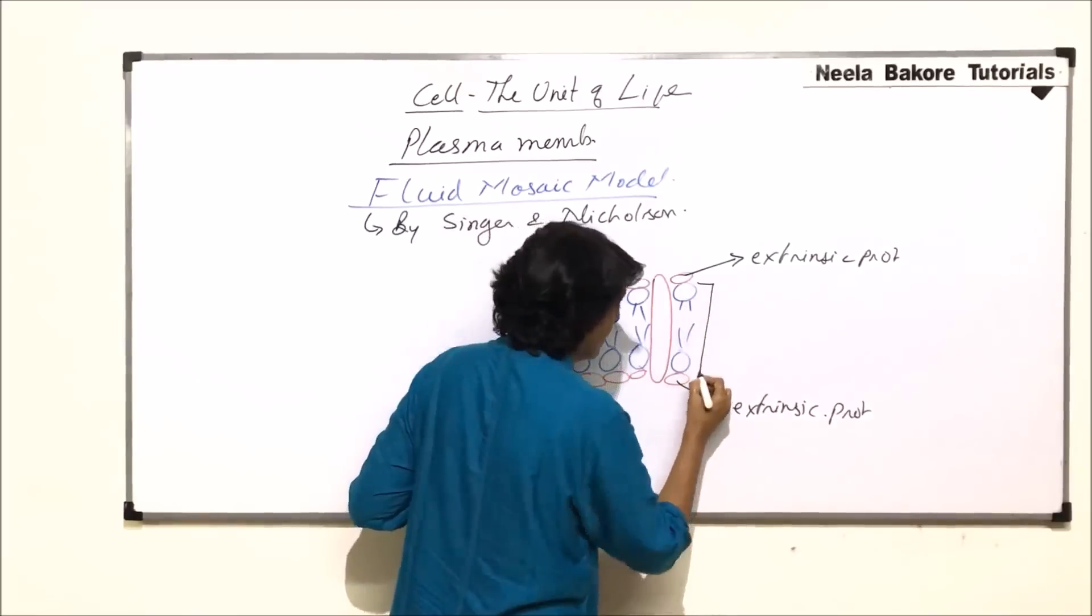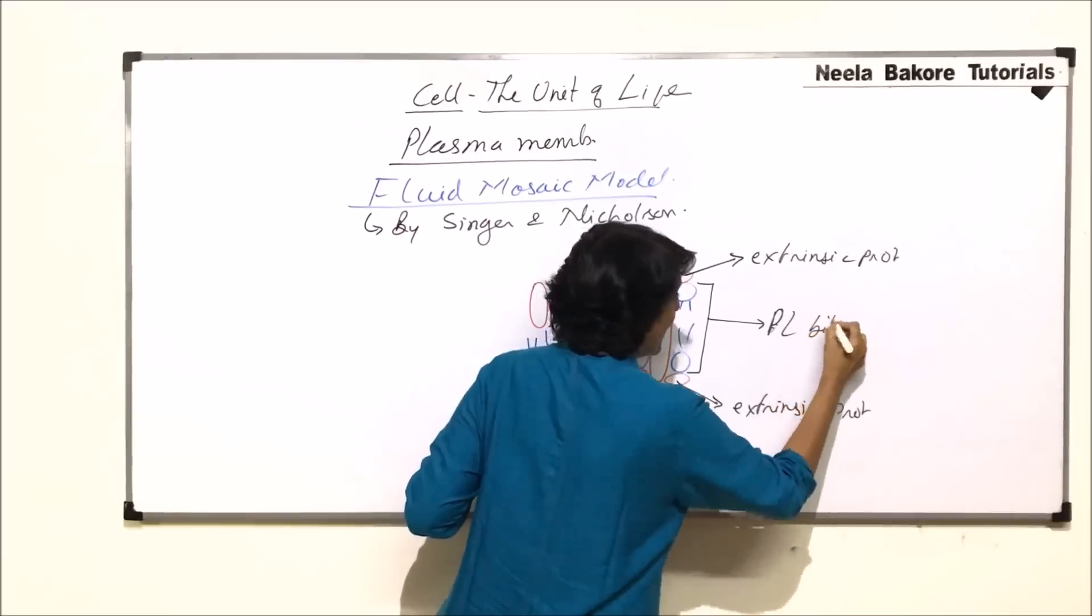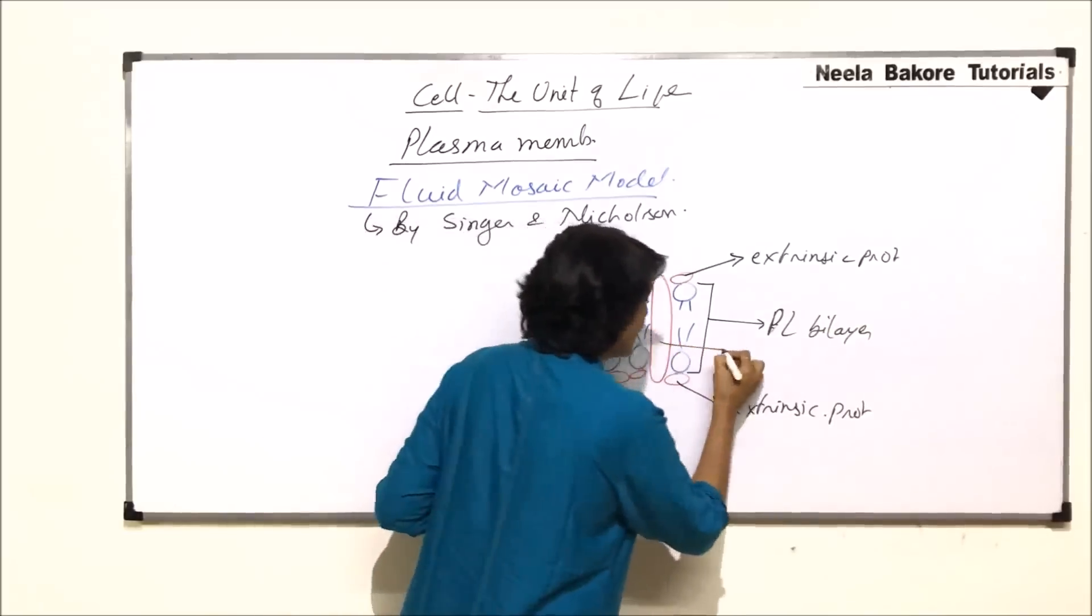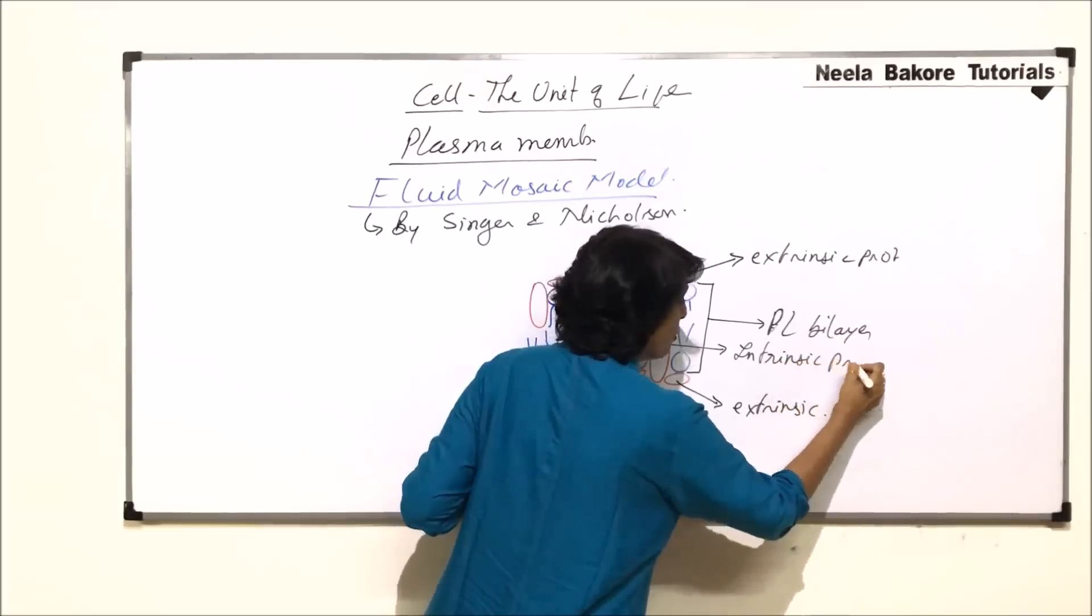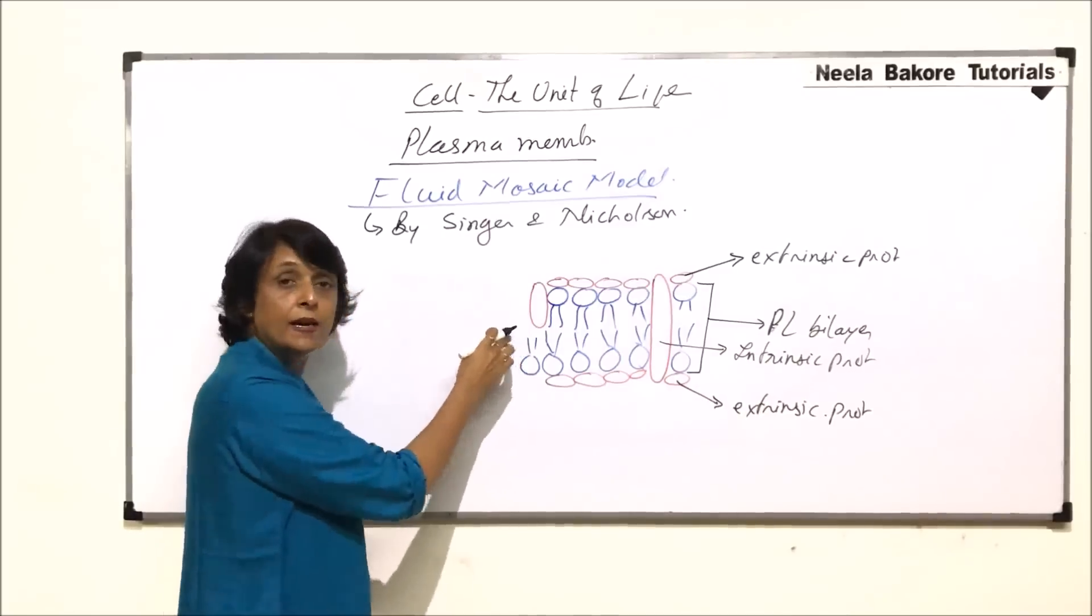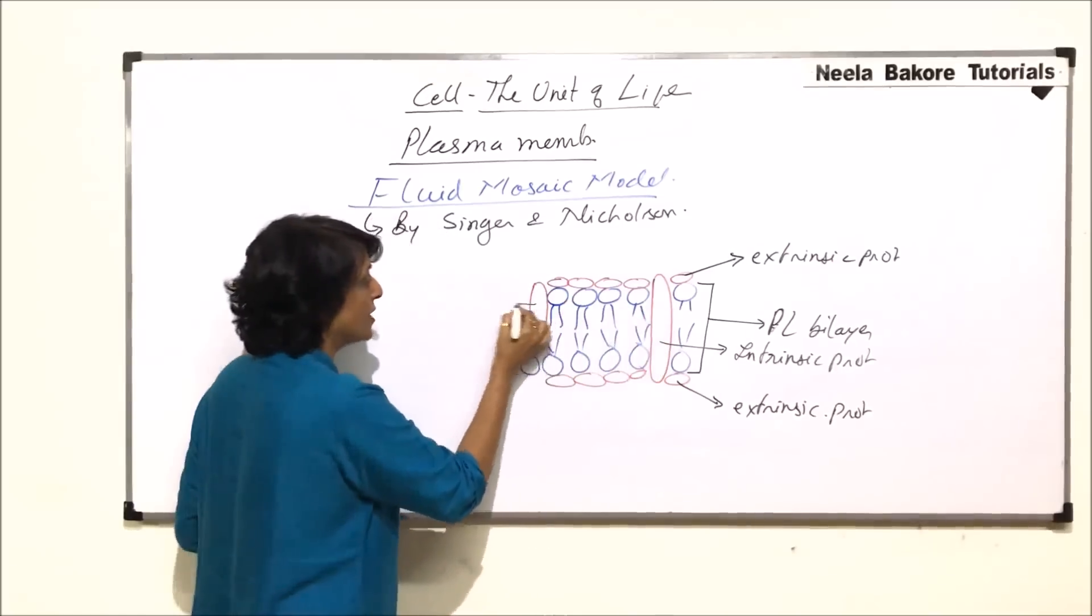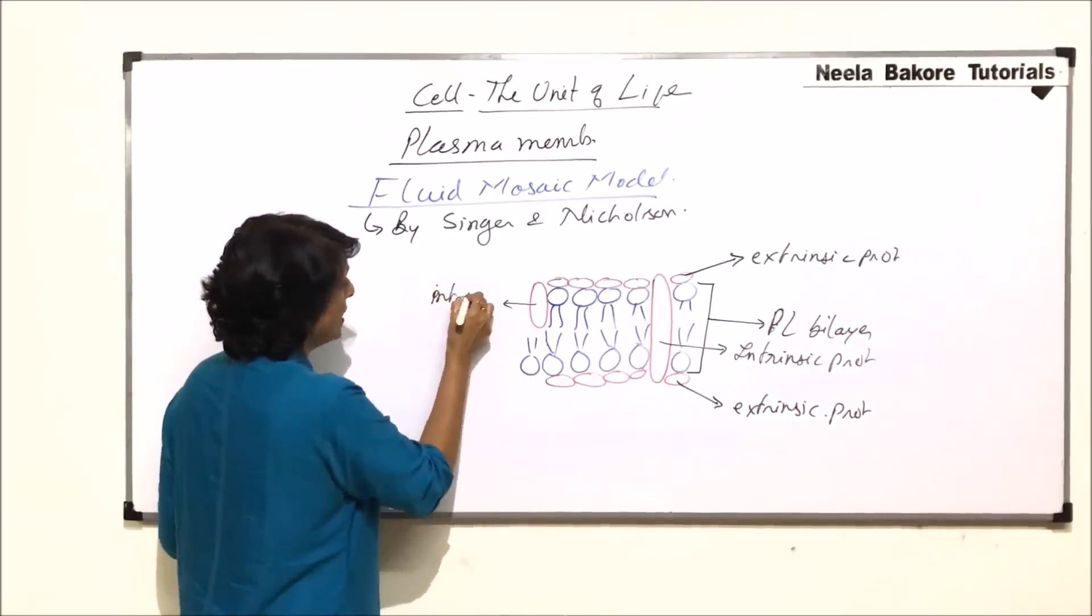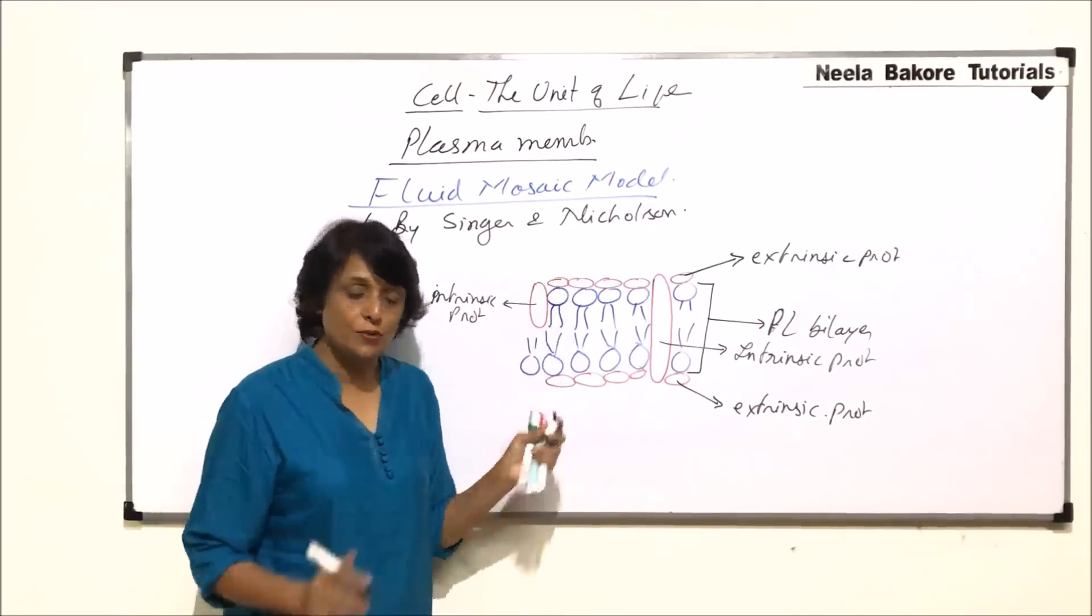This is the phospholipid bilayer. This big protein which is completely embedded is intrinsic protein, whereas this one which is partially embedded we will also call intrinsic. Whether it is completely embedded or partially embedded, if it is embedded then it is called intrinsic protein. So there are two types of proteins: extrinsic and intrinsic.